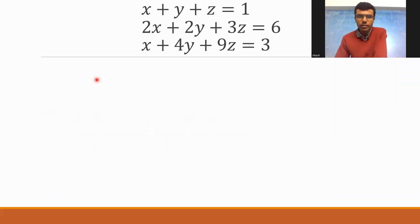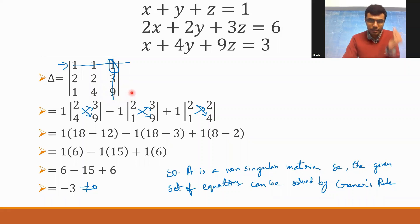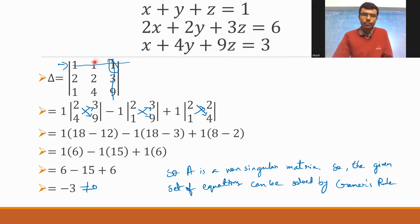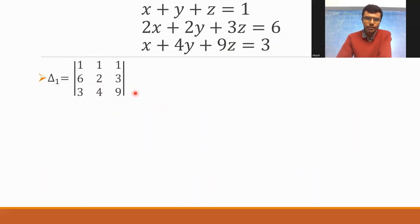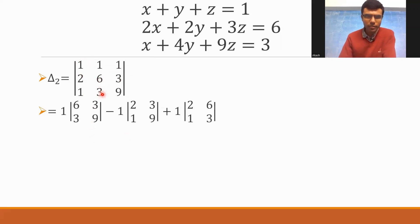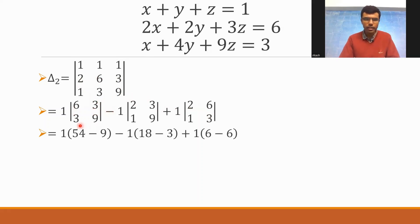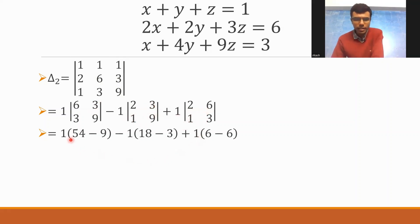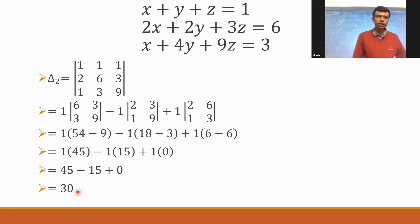For delta 2, you need to replace the second column of delta with the elements of D — basically 1, 6, 3. So in place of 1, 2, 4 in the second column, I have 1, 6, 3. The other two columns remain the same. Again the basic expansion: 1 into det(6,3,3,9) minus 1 into det(2,3,1,9) plus 1 into det(2,6,1,3). Solving: 1 into 45 minus 1 into 15 plus 1 into 0. So 45 minus 15 is 30. Delta 2 is 30.